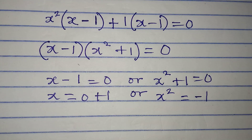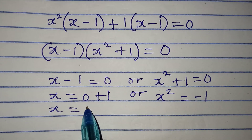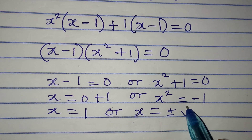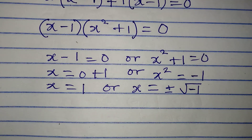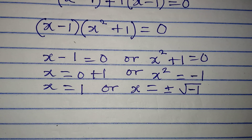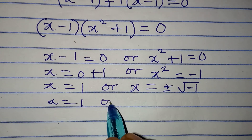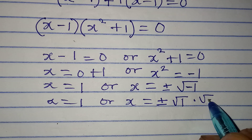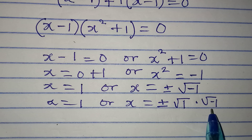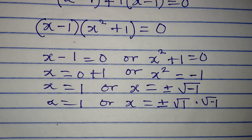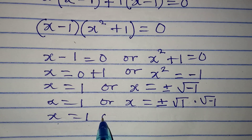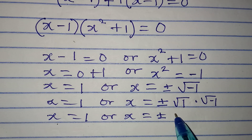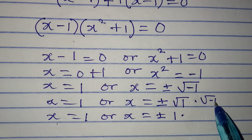On the other side, x squared will be equal to negative 1. Now, the square root of negative 1 does not give us a real solution, but we want to consider all three solutions. So x is equal to 1, or x is equal to positive or negative square root of negative 1, which we can write as square root of 1 times square root of negative 1. Square root of 1 is 1, and square root of negative 1 is i.